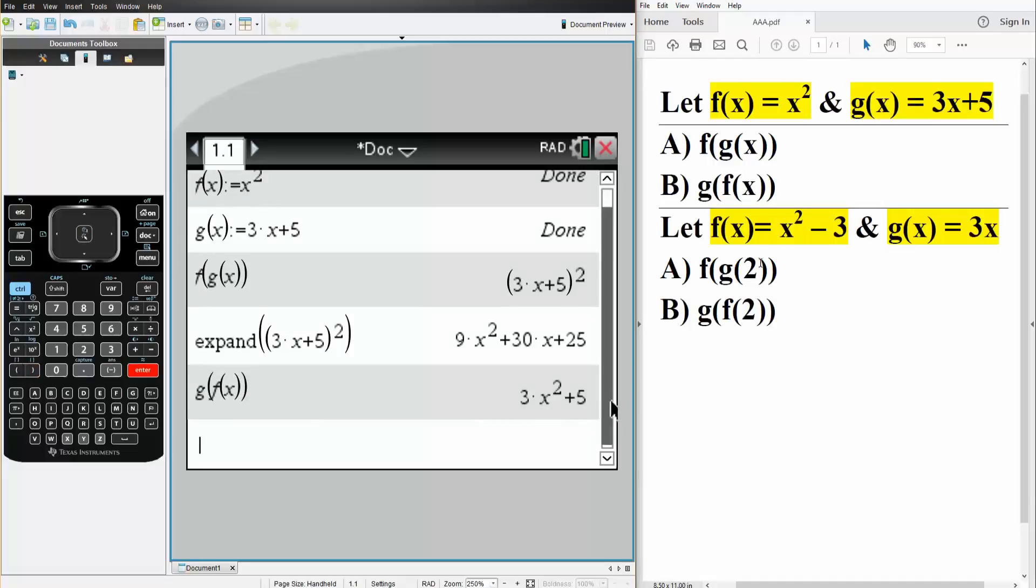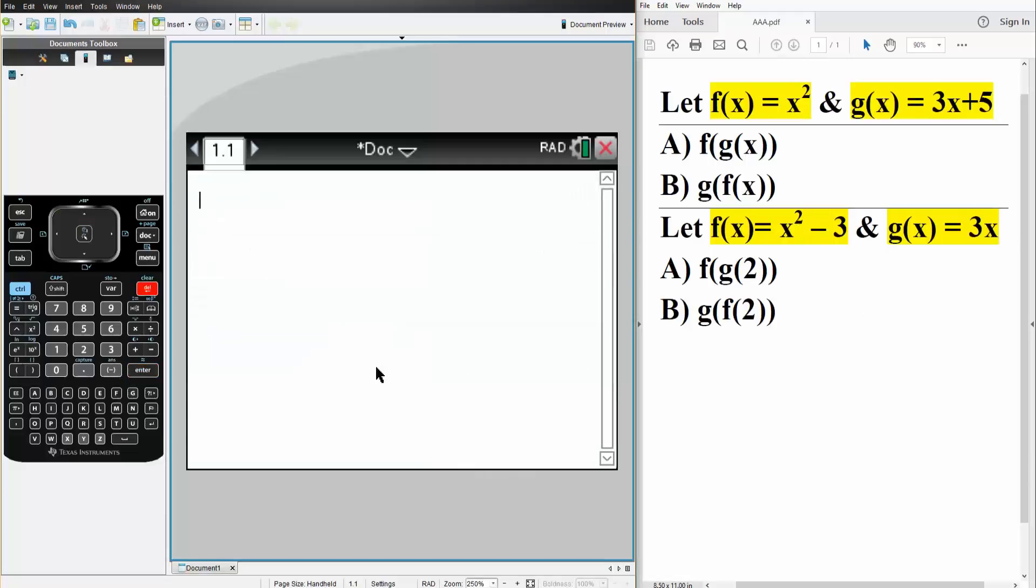And now we'll do this question right here. We have x squared minus 3 for f of x, and gx is 3x. So let's clear this out. So we can say that f of x, and we hit ctrl, this icon right here. We want to define it again. So x squared minus 3. We hit enter. So now f of x is defined. And now g of x, same thing. We do ctrl, this icon right here, 3 times x. Hit enter. Now it's defined.